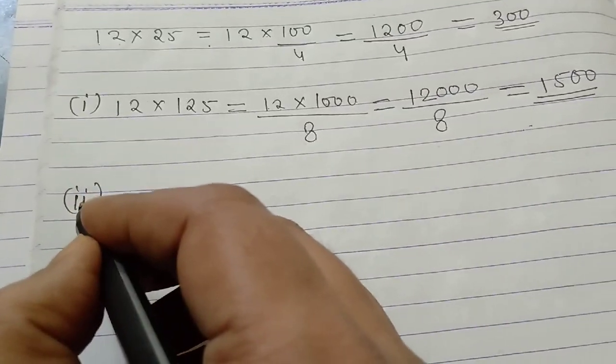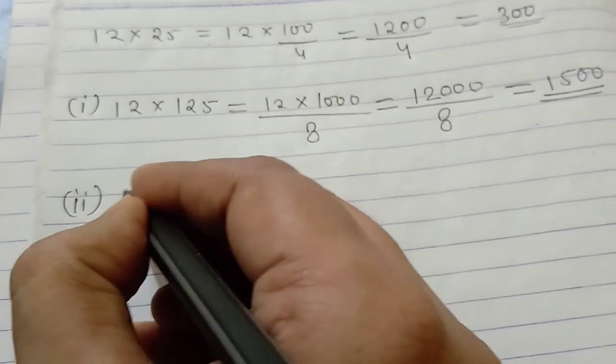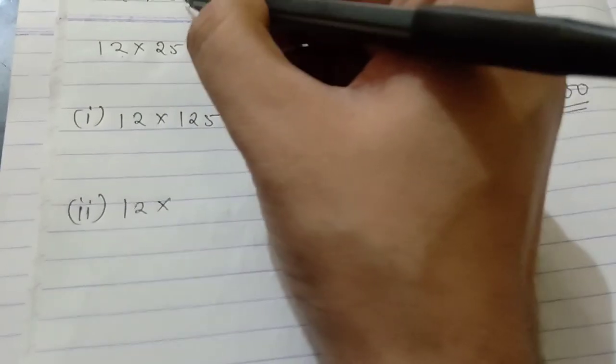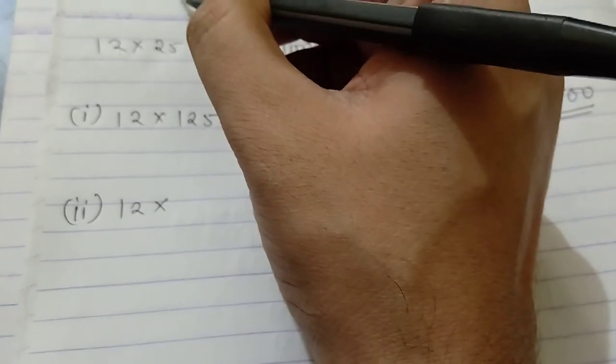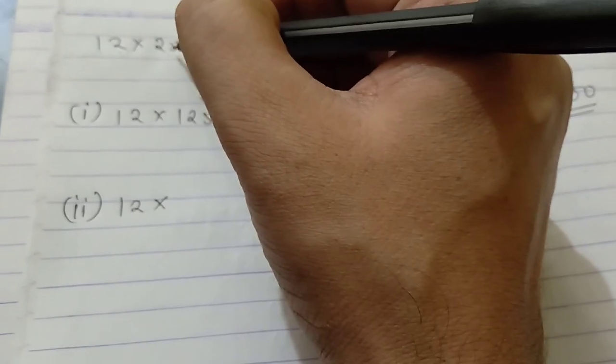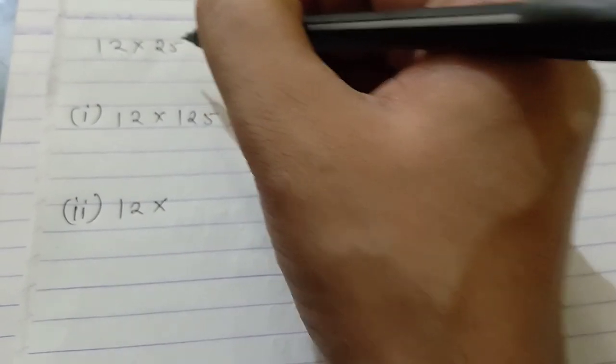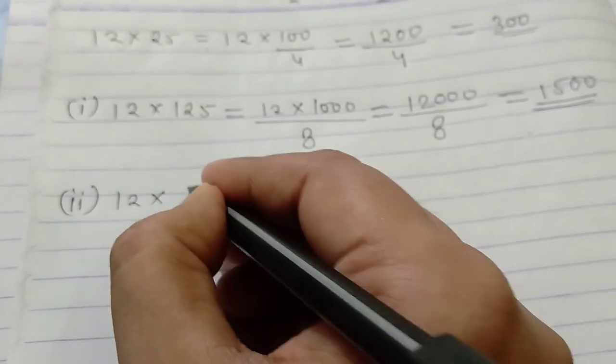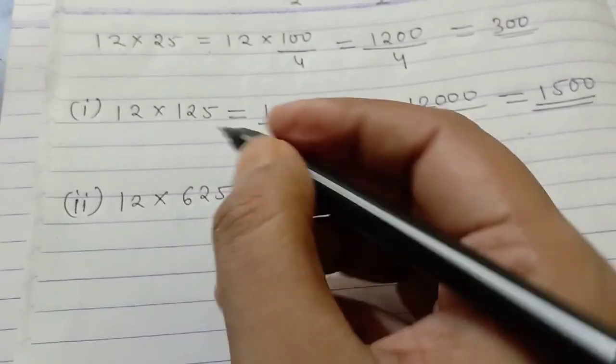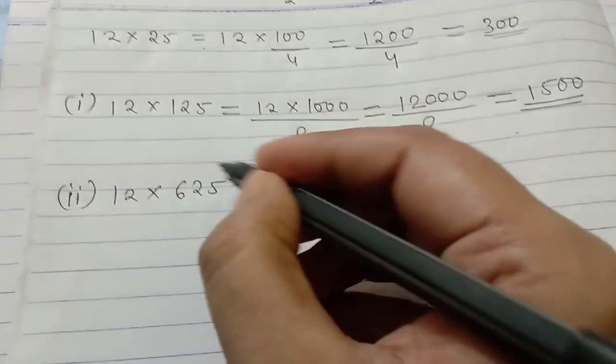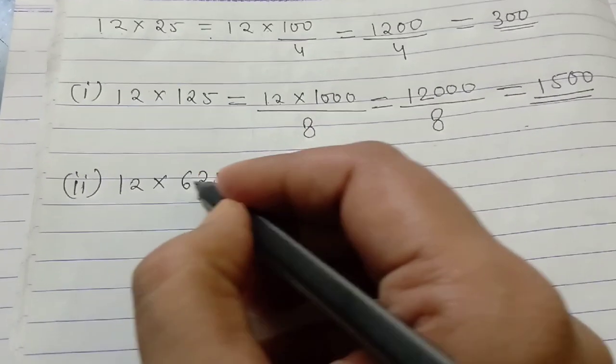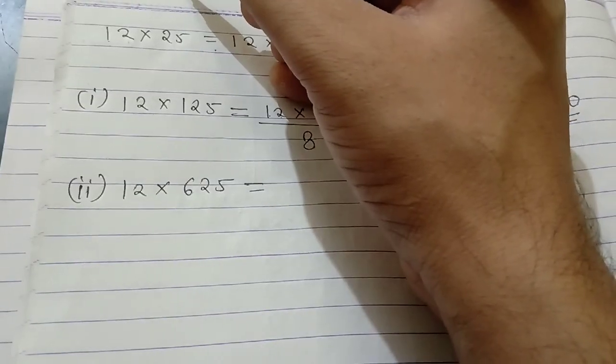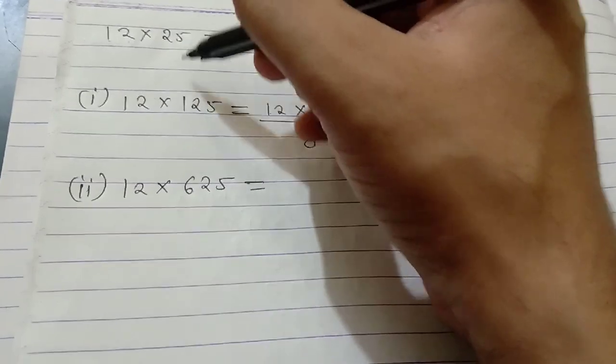Now, in the question number second, 12 will be the same number. Now, you can see 5, again 5 times 25, 25 multiplied by 5 is 125 and 125 multiplied by 5 gives 625. I hope you can understand, this becomes 625. This is increasing of 5 times.